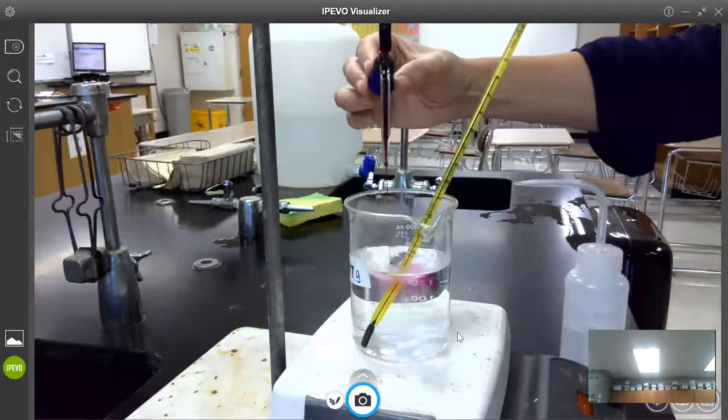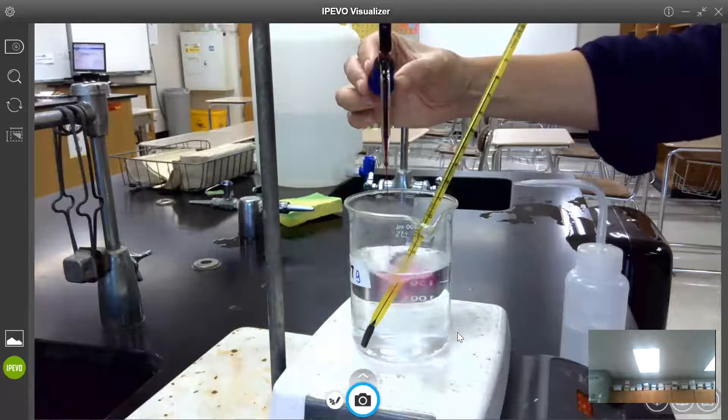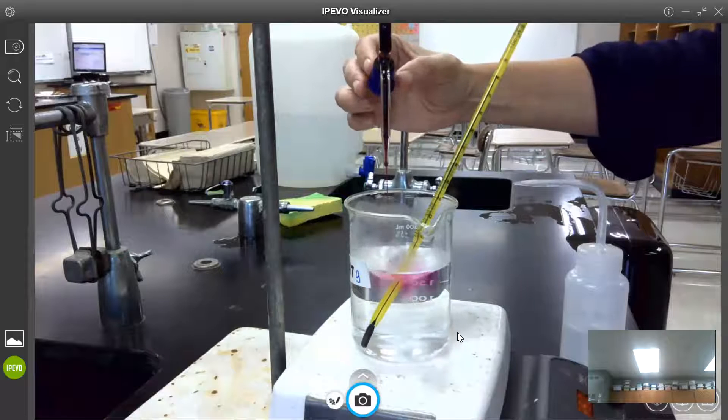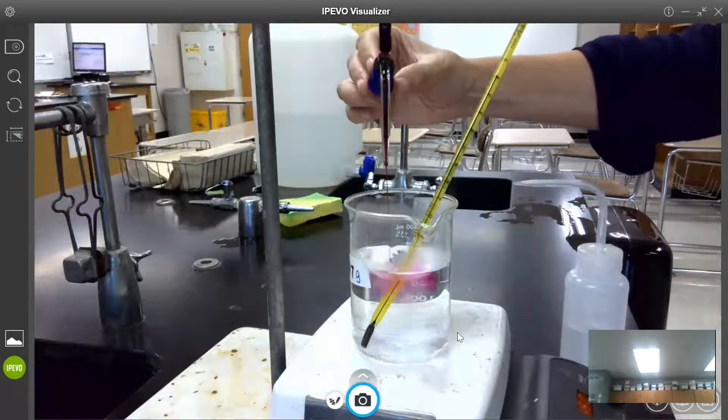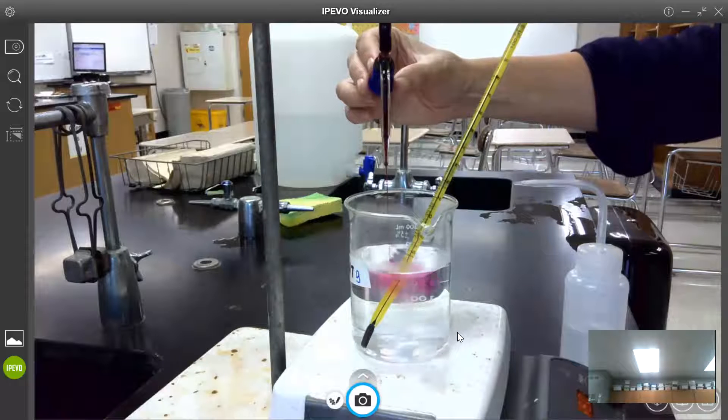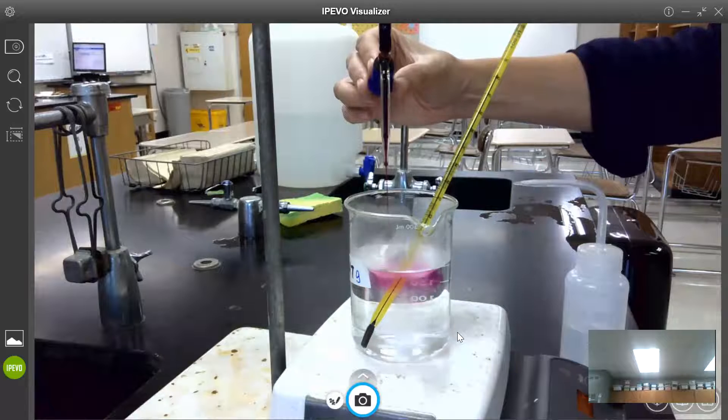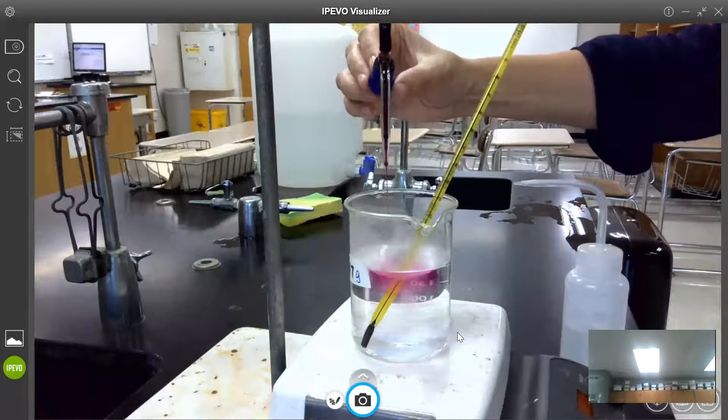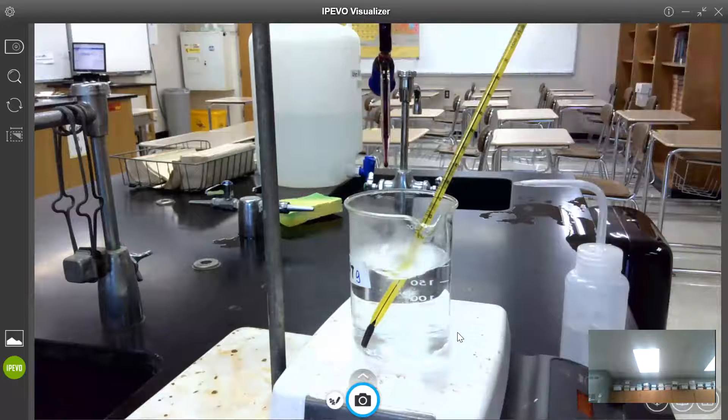And so you can see I'm adding a steady stream and the color is immediately dissipating. So just to give you an idea of the volume that I've added so far the burette reading right now is about 41 milliliters and I'm stopping.